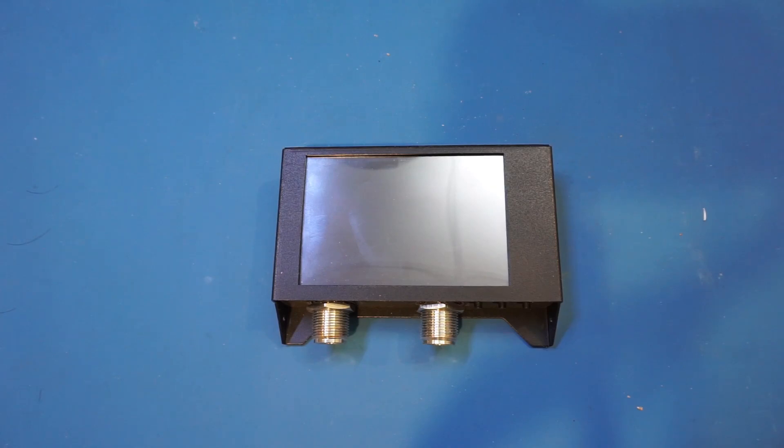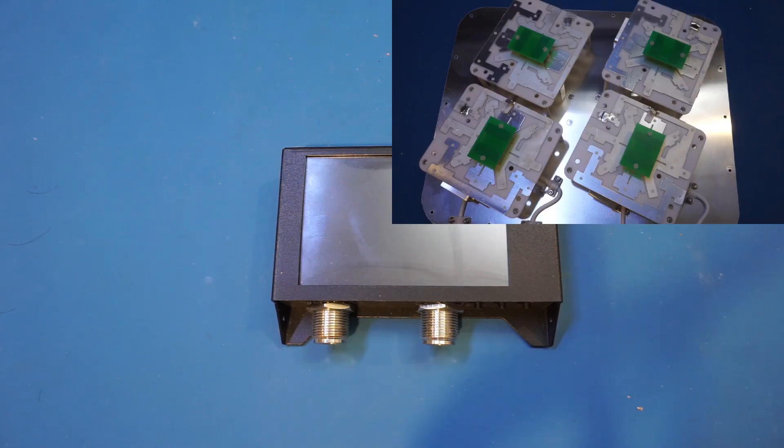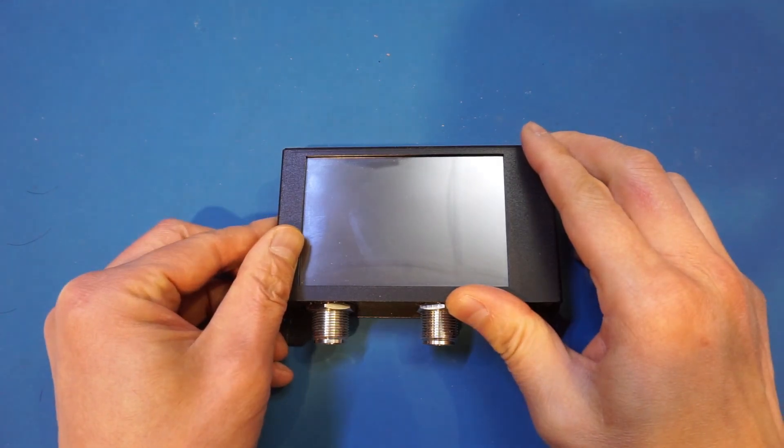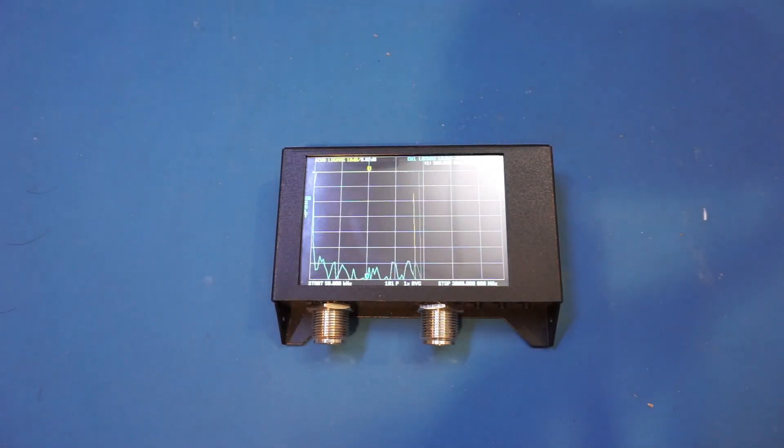By the way, this SA-2N V2 nano VNA is currently on sale on Banggood. I have included a coupon code in the video description below that will save you approximately 15 dollars. Anyway, in today's measurement we're going to use the 4x4 MIMO panel antenna I received from Waveform a while ago. I measured that antenna using a nano VNA-F V2 and a LiteVNA before. I will put the links to these two videos down below in case you haven't watched them already.